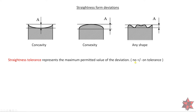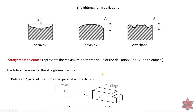Straightness tolerance represents the maximum permitted value of the deviation — no plus or minus in the tolerance frame, so keep this in mind. The tolerance zone for straightness can be between two parallel lines oriented parallel with a datum.